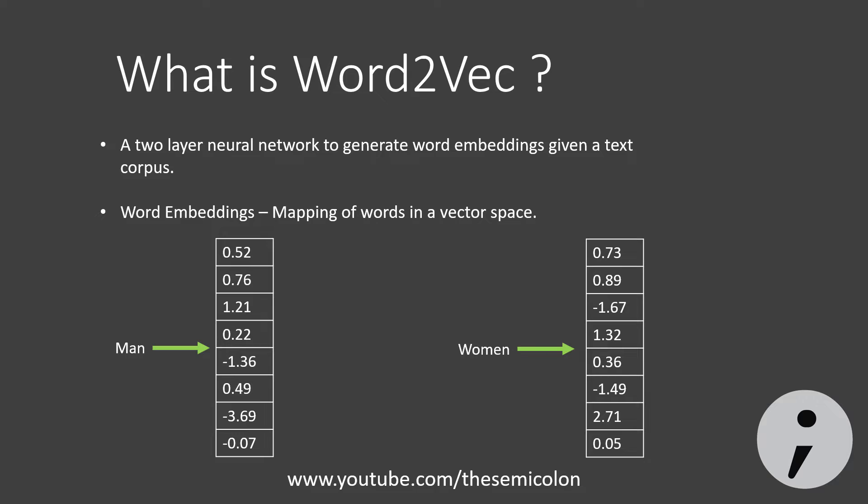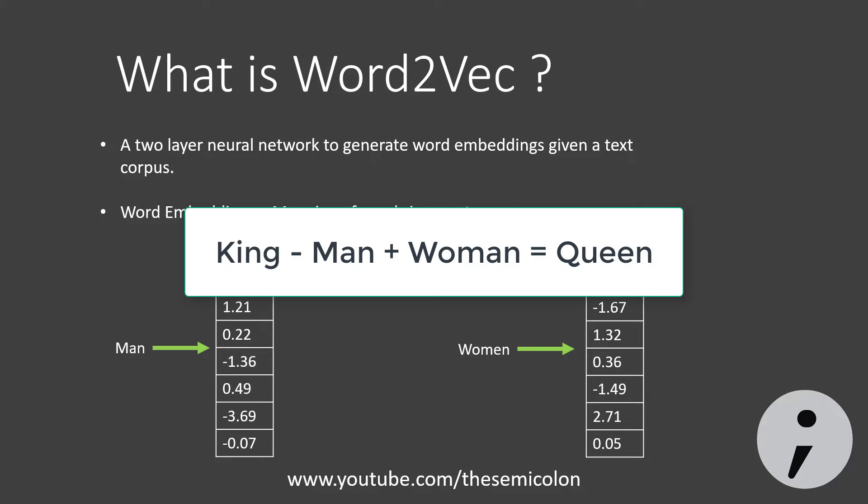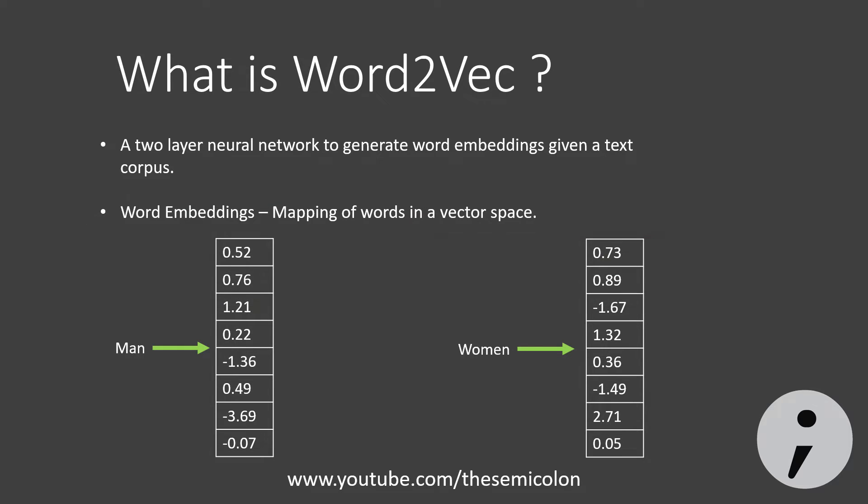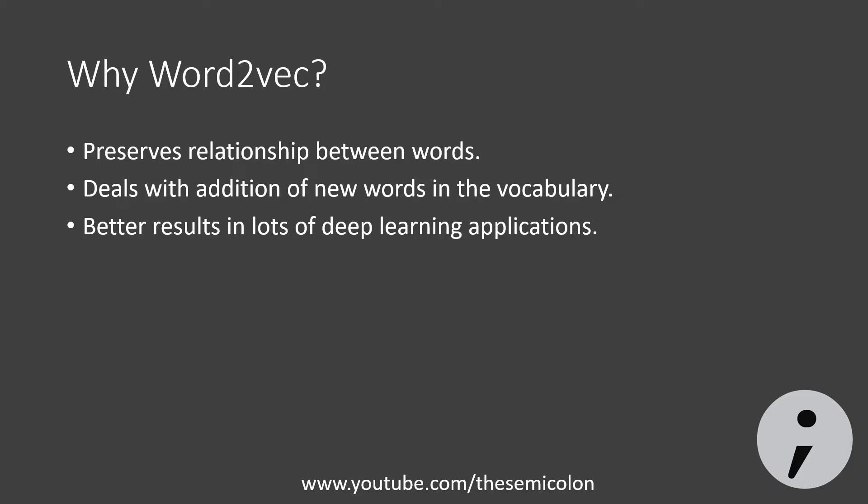One example of this relationship is a very famous result of word2vec: the vector of the word 'king' minus the word 'man' plus the word 'woman' gives you the word vector of the word 'queen'. This relationship is preserved by word2vec just by iterating through a large corpus of text, like a Wikipedia or a newspaper corpus.